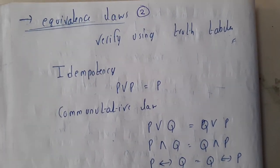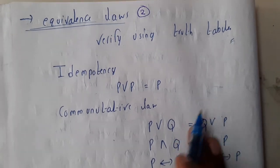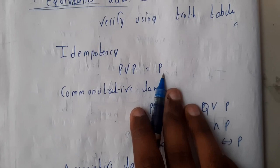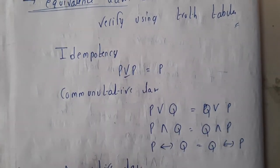Idempotency law: idempotency is nothing but P∨P is nothing but P. P or P is only P, it is not V, it is ∧P. P or P and P and P.